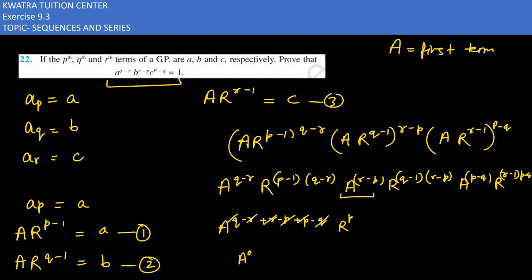For r, the power will be p minus 1 times q minus r, plus q minus 1 times r minus p, plus r minus 1 times p minus q. Then after expanding: rp minus rq, then rq minus pq, then rp minus rq, after it minus p plus q.